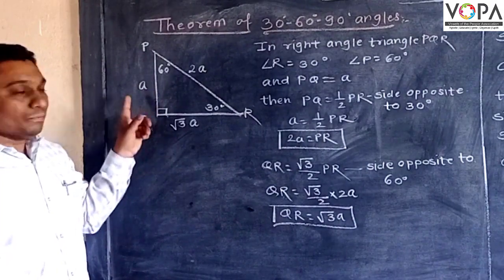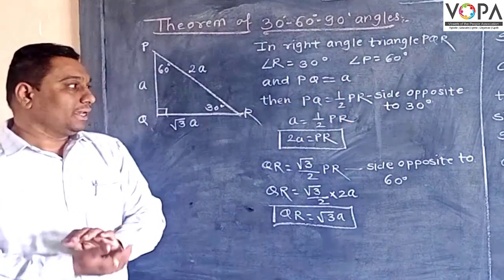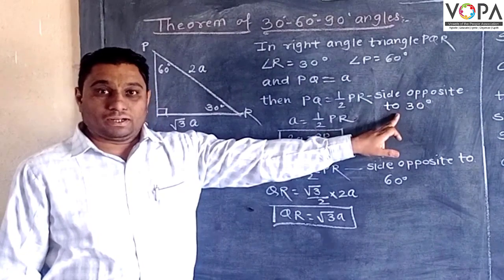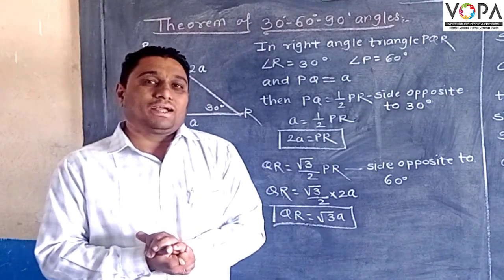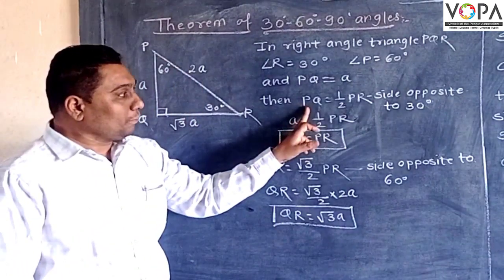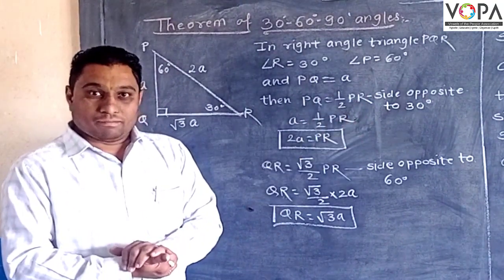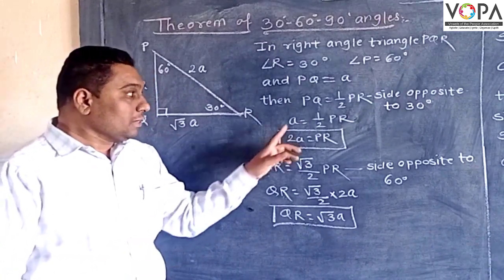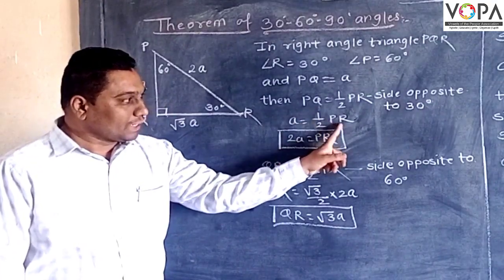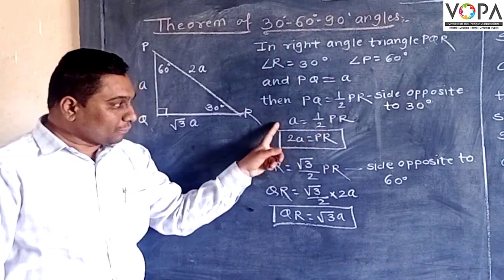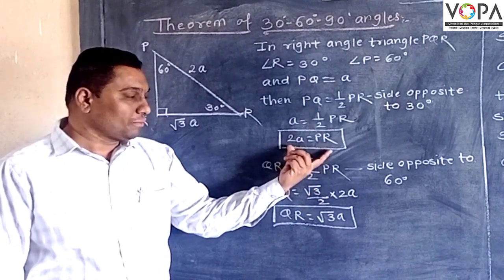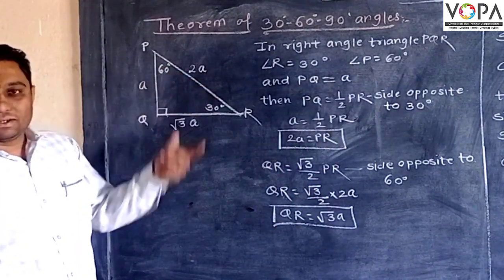So if we take PQ as side 'a', then as per what we know, the side opposite the 30 degree angle is half of the hypotenuse. Therefore PQ is equal to one half of PR. The value of PQ is 'a', so a is equal to one half of PR. Taking 2 to this side, twice of a is equal to PR. So the value of PR is 2a.